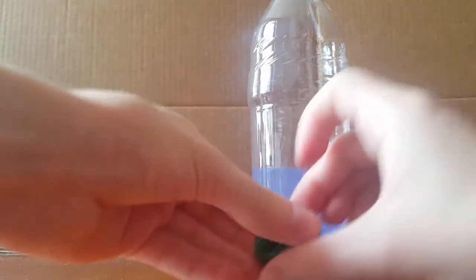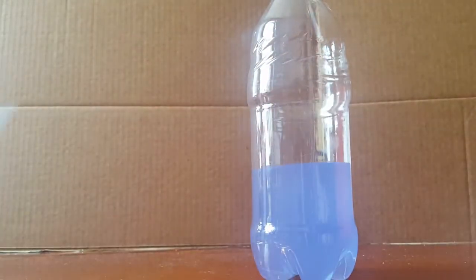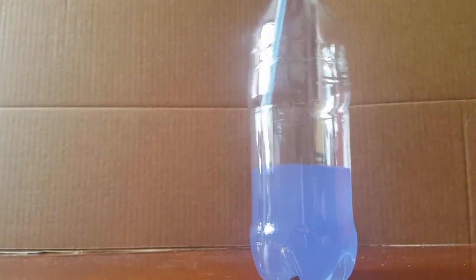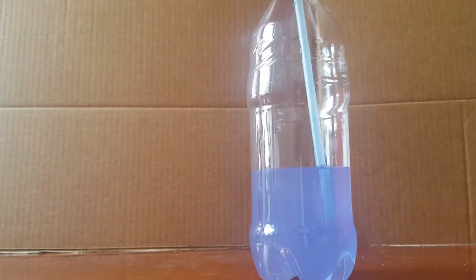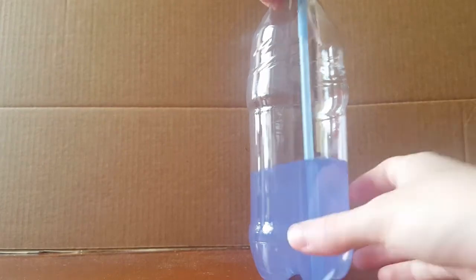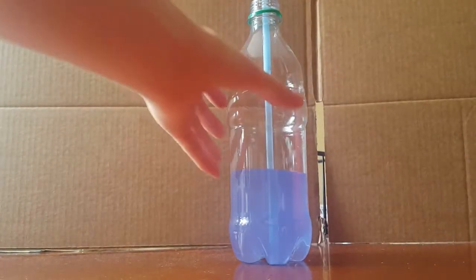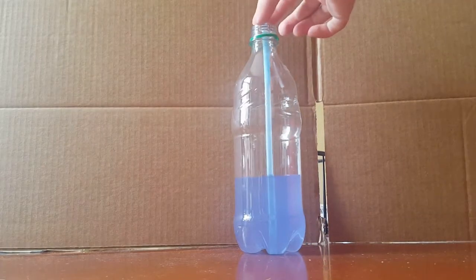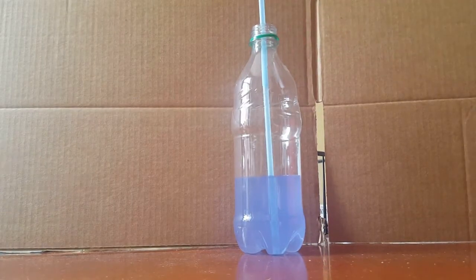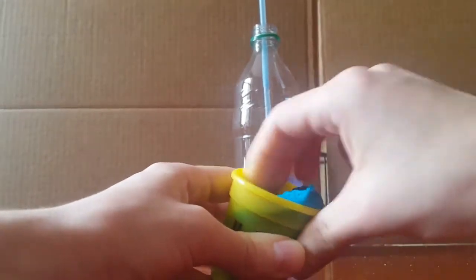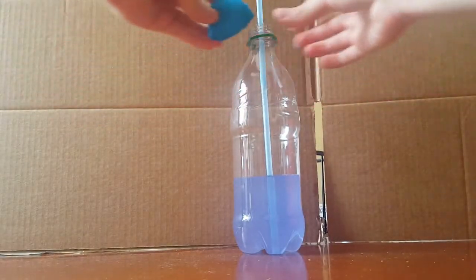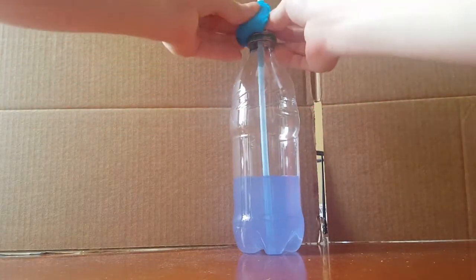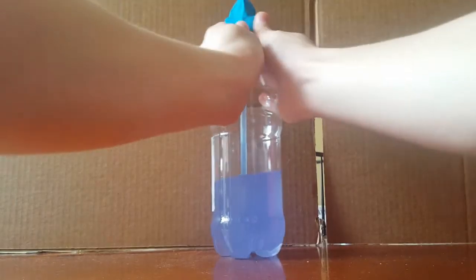So now we have our colored rubbing alcohol in the bottle. You're gonna want to remove the cap. I'm gonna take your straw and place it into the bottle. Try to have it at the center of the top. We're gonna want to seal the top so no air can get in or out. So we're gonna take some of our clay and we're gonna build it around the straw at the top. Airtight as you can make it.